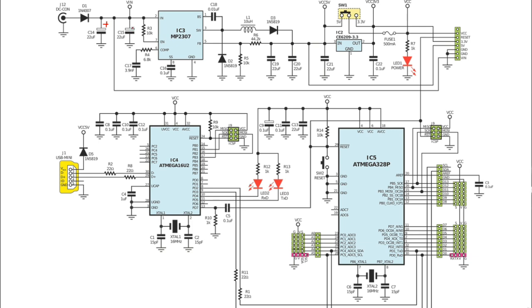Here we have another polarized capacitor, C15, with 22 microfarads. The VIN — the input voltage — comes from here. The negative part of the capacitor is connected to the ground. Here we have an IC — IC3 — with reference MP2307.